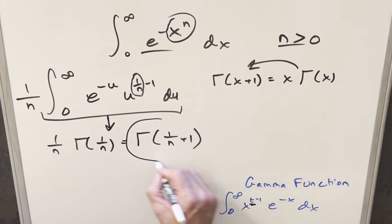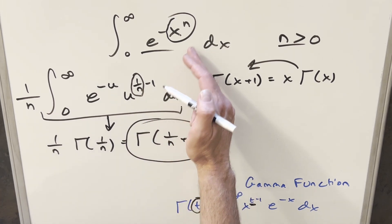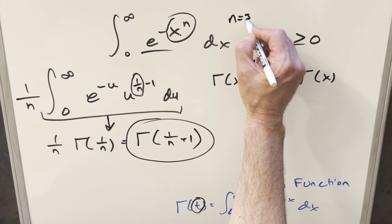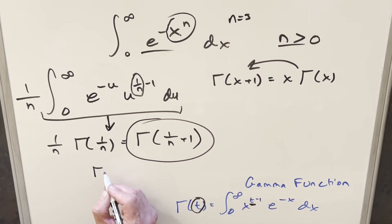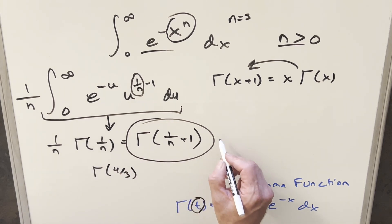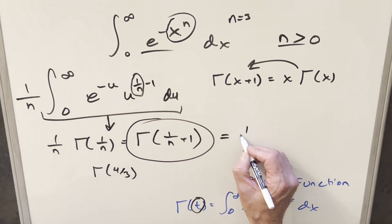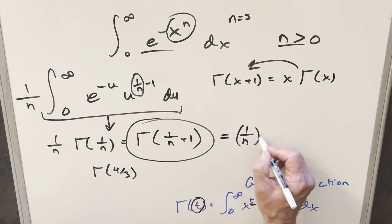I think this might be the best way to express our solution. In that other video when we had n equals 3, we got gamma of 4/3. Now, one thing you can do with this is the gamma function can also be expressed in terms of factorials. So this would end up being (1/n)!.